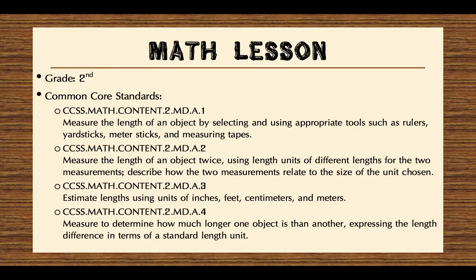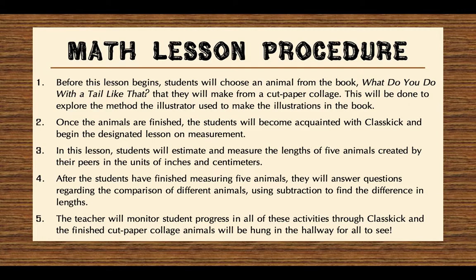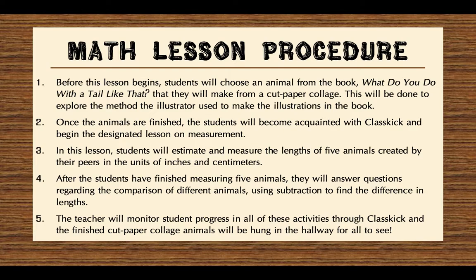Another way this text could be used in the classroom is by incorporating it into a second grade math lesson. This lesson will help students develop their measuring and data comparing skills. Before this lesson begins, students will choose an animal from the book to make from a cut paper collage. This will be done to explore the method the illustrator used to make the illustrations in the book. Once the animals are finished, the students will become acquainted with ClassKick and begin the designated lesson on measurement. In this lesson, students will estimate and measure the length of five animals created by their peers in the units of inches and centimeters.